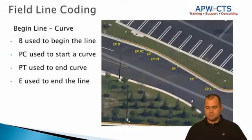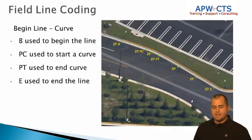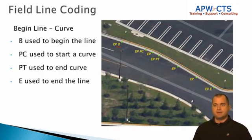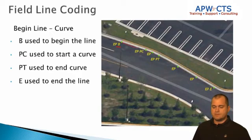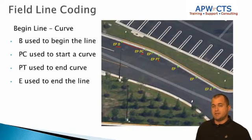Let's begin with a very basic field code. In my image I have a curb line and an edge of pavement. I'm starting the line with a B, so I'm coding EPB — that B tells the figure where to start. In reality that would be further up the road where the survey begins. The very next shot is a PC, telling it I want a curve here, and I use a PT to end the curve. I also took a shot in the middle and just called it EP — the software picks that up and makes it part of the curve as it draws the line.